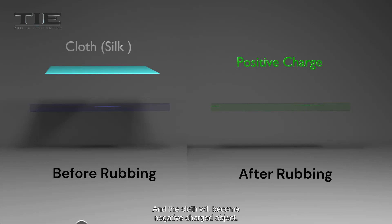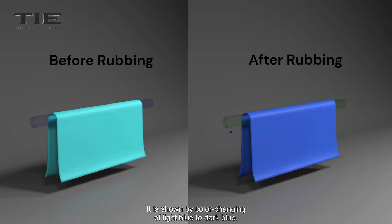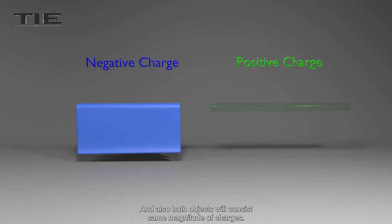And the cloth will become a negative charged object. It is shown by color changing of light blue to dark blue. And also, both objects will consist of the same magnitude of charges, but in opposite polarity.